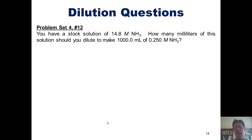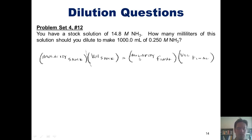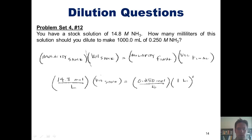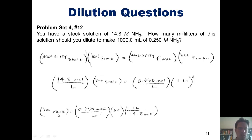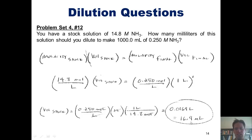Let's look at another example. You've got a stock solution of 14.8 molar NH3 ammonia. How many milliliters of this solution would you dilute to make 1,000 milliliters of 0.25 molar ammonia? Once again, I remember the equation: molarity of the stock times volume of the stock equals molarity final times volume of final. 14.8 moles per liter is the molarity of my stock solution; volume of the stock is unknown; 0.25 moles per liter is the concentration I want; and 1,000 milliliters, or 1 liter, is the final volume. I rearrange algebraically and get a final answer of 0.0169 liters, or 16.9 milliliters.